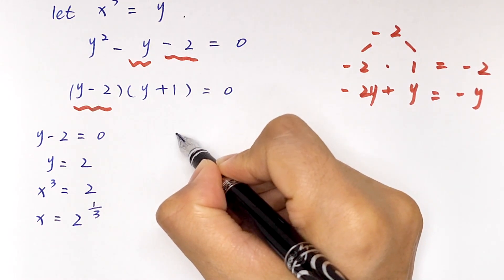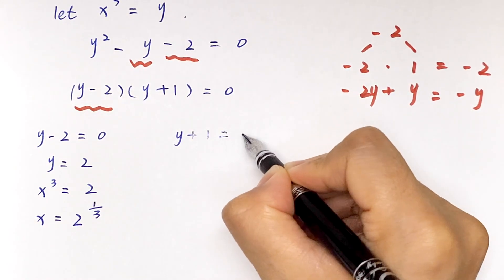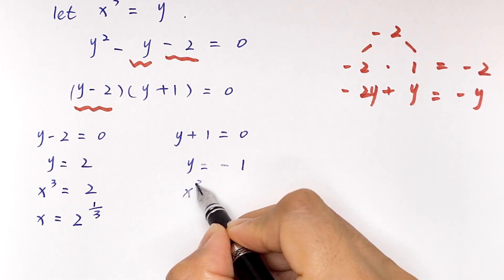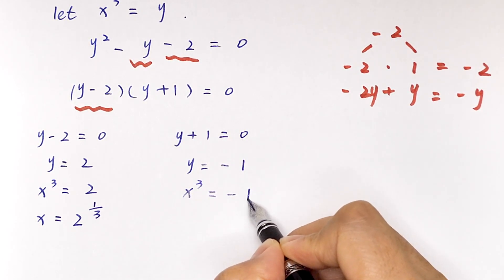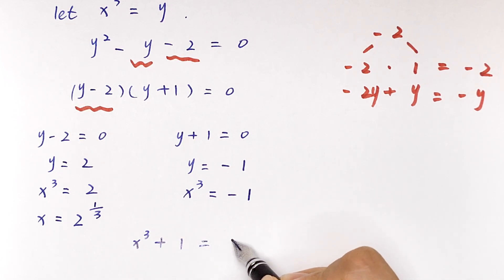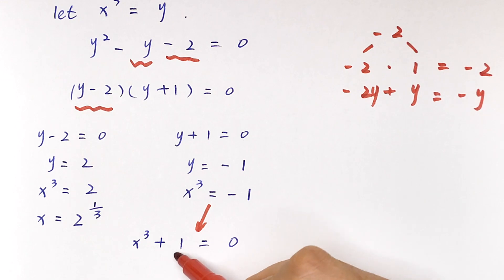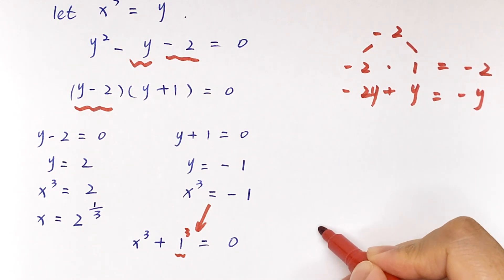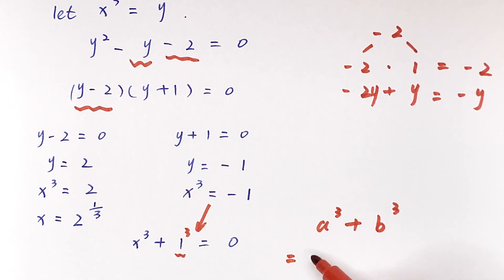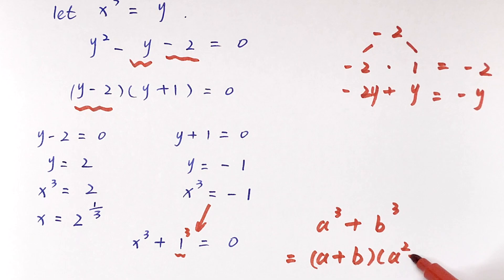Case two: y plus 1 equals 0, so y equals negative 1. This means x cubed equals negative 1, or x cubed plus 1 equals 0. We recognize 1 as 1 cubed and apply the sum of cubes formula: a cubed plus b cubed equals a plus b, bracket, times a squared minus ab plus b squared.